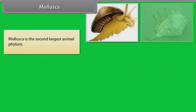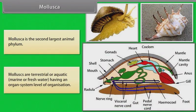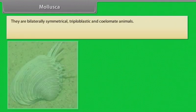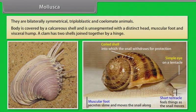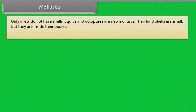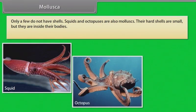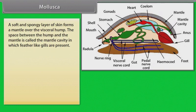Mollusca is the second largest animal phylum. Molluscs are terrestrial or aquatic — marine or freshwater — having an organ system level of organization. They are bilaterally symmetrical, triploblastic and coelomate animals. The body is covered by a calcareous shell and is unsegmented, with a distinct head, muscular foot and visceral hump. A clam has two shells joined together by a hinge; only a few do not have shells. Squids and octopuses are also molluscs — their hard shells are small and inside their bodies. A soft and spongy layer of skin forms a mantle over the visceral hump.